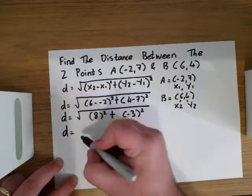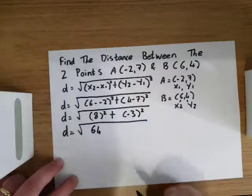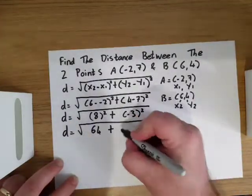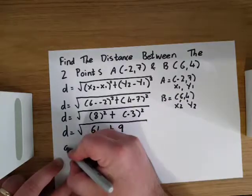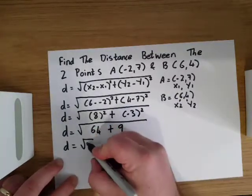So we now have the square root of 8 squared, which is 64, plus -3 squared. Remember, -3 times -3 becomes positive 9. So we have d equals root 64 plus 9, which gives us root 73.